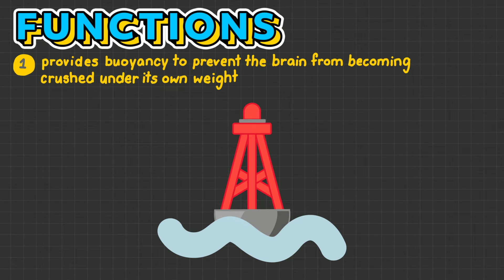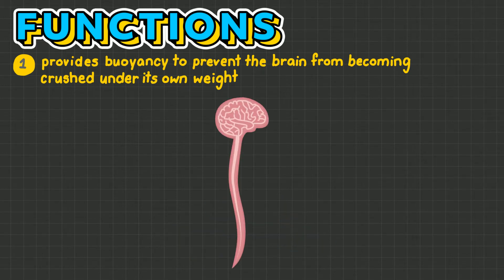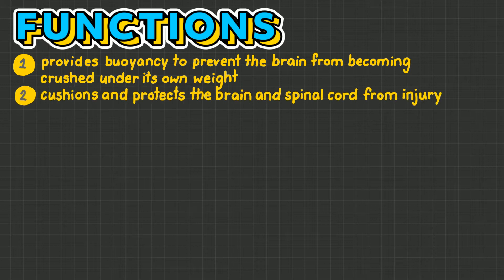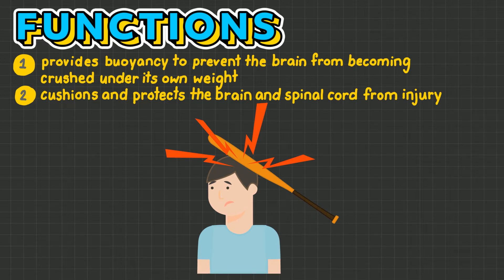Cerebrospinal fluid has four main functions. It provides buoyancy to the structures of the central nervous system. Without cerebrospinal fluid, the brain and spinal cord will crush itself under its own weight. It also cushions and protects the brain and spinal cord from injury, such as blunt force trauma.